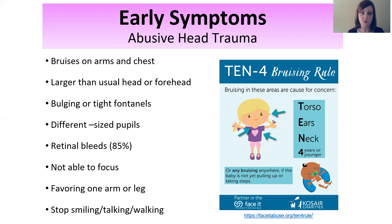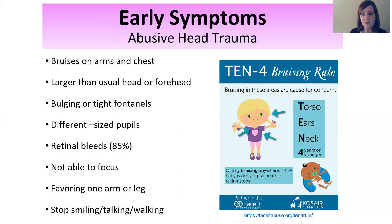Maybe you have heard of the 10-4 bruising rule. The T-E-N in 10 stands for torso, ears, and neck — so you would be looking for any signs of bruising on the torso, ears, and neck of a child four years or younger. Then you would be looking for any bruising anywhere on an infant who is under four months old. Keeping these in mind would help someone know what signs to look for if you suspect abuse.